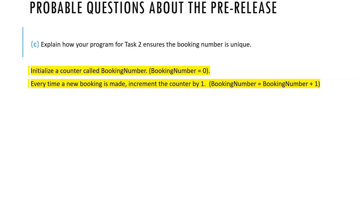Another probable question: explain how your program for task 2 ensures that each booking has a unique booking number. For the first mark, explain that we initialize a counter called booking number to 0 before creating any bookings. For the second mark, every time a new booking is made, we increment that counter by one: booking number = booking number + 1. This ensures every booking gets a unique number.